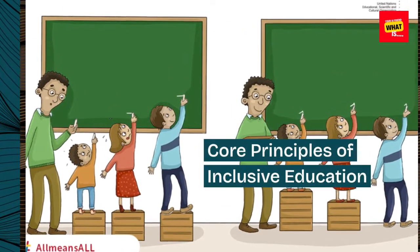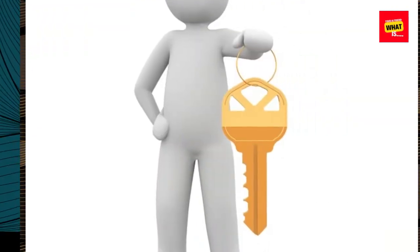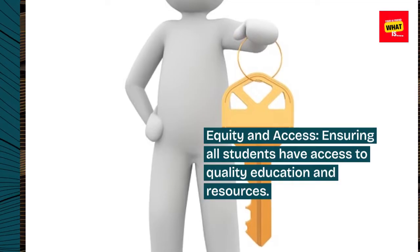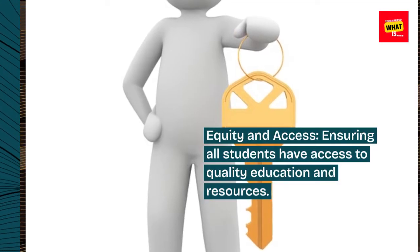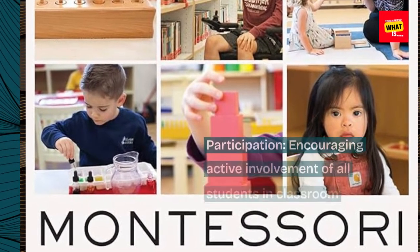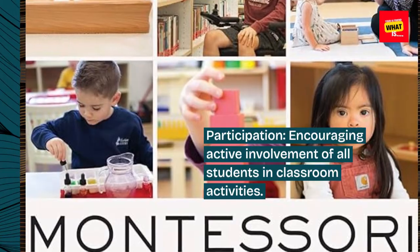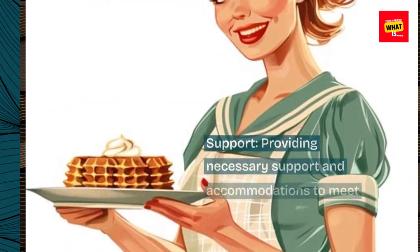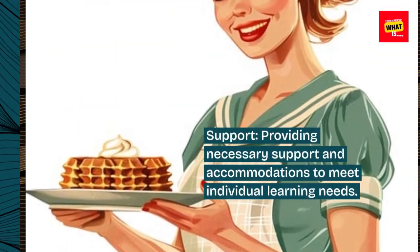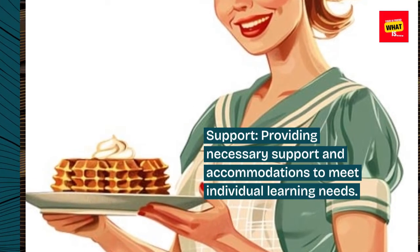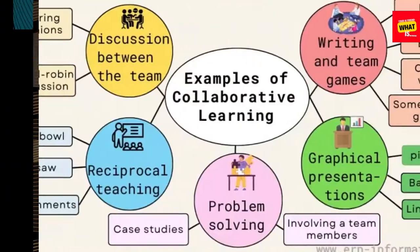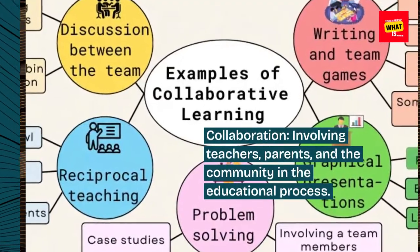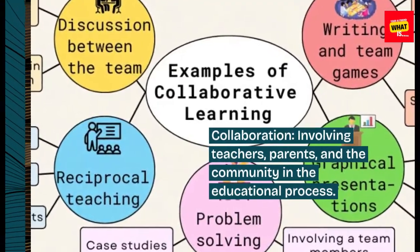Core principles of inclusive education. Equity and access: ensuring all students have access to quality education and resources. Participation: encouraging active involvement of all students in classroom activities. Support: providing necessary support and accommodations to meet individual learning needs. Collaboration: involving teachers, parents, and the community in the educational process.